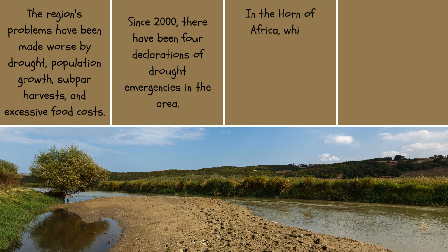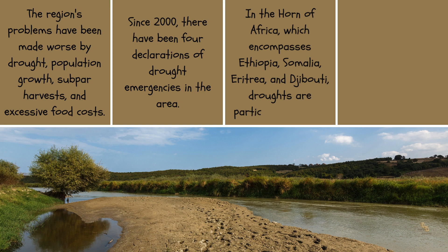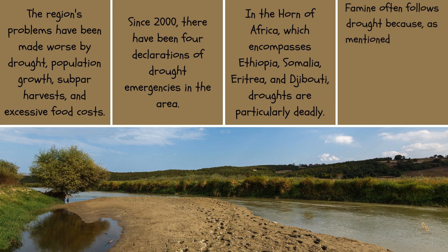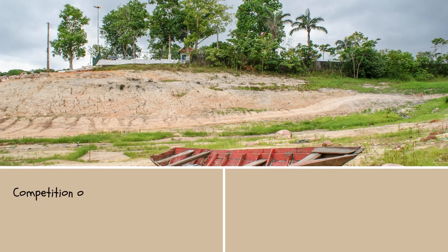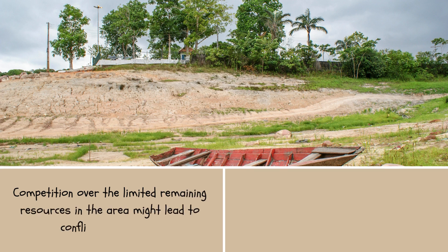In the Horn of Africa, which encompasses Ethiopia, Somalia, Eritrea, and Djibouti, droughts are particularly deadly. Famine often follows drought because 80% of the population lives in rural areas and depends on agriculture for both food and money. Competition over the limited remaining resources in the area can also lead to conflict and violence.